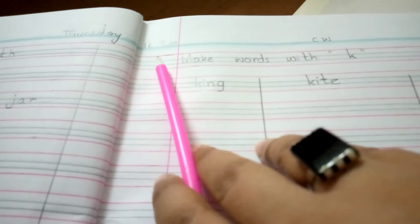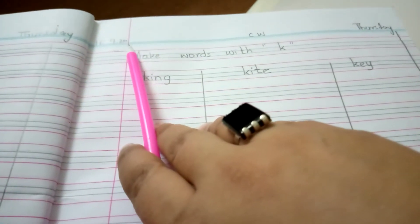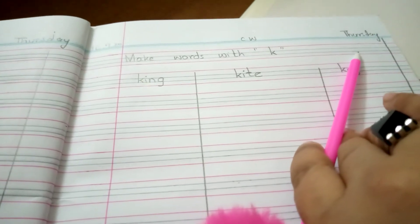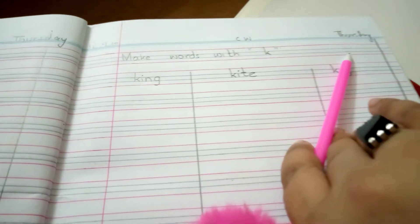Write down the date. Today is 16th of September 2020. The day is Thursday. T-H-U-R-S-D-A-Y. Thursday.